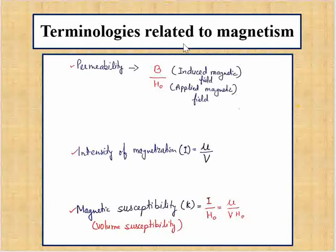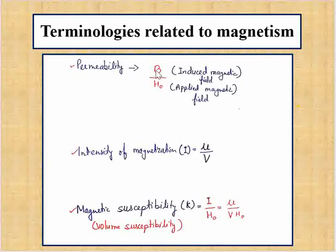We will discuss some terminologies related to magnetism. The first terminology is permeability. Permeability is the ratio of the induced magnetic field to the applied magnetic field — the ratio of both magnetic fields is permeability.